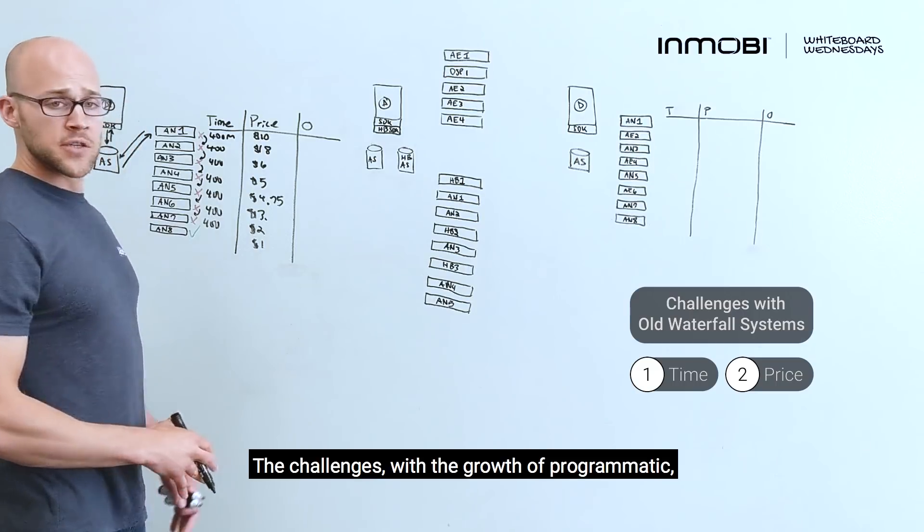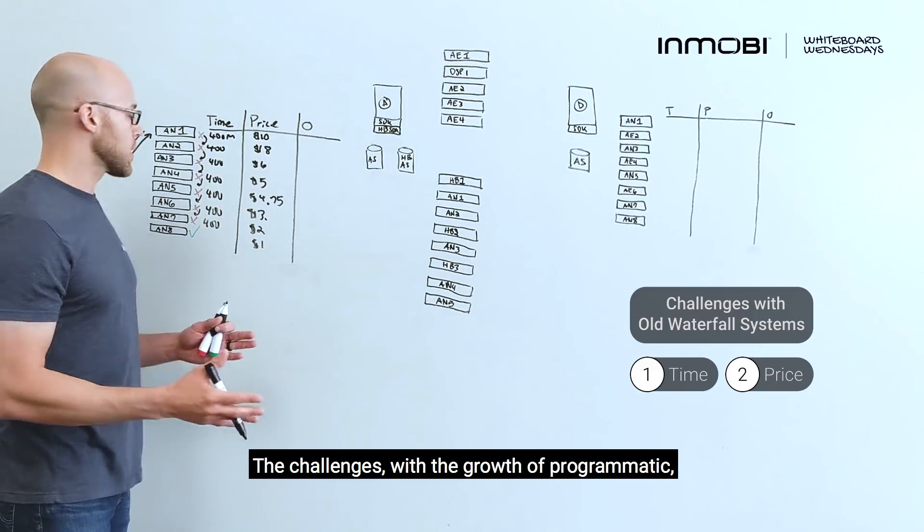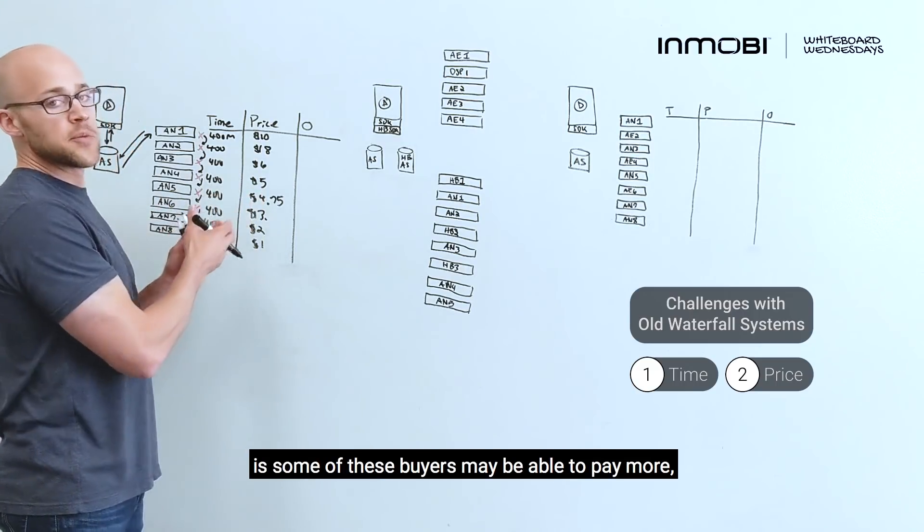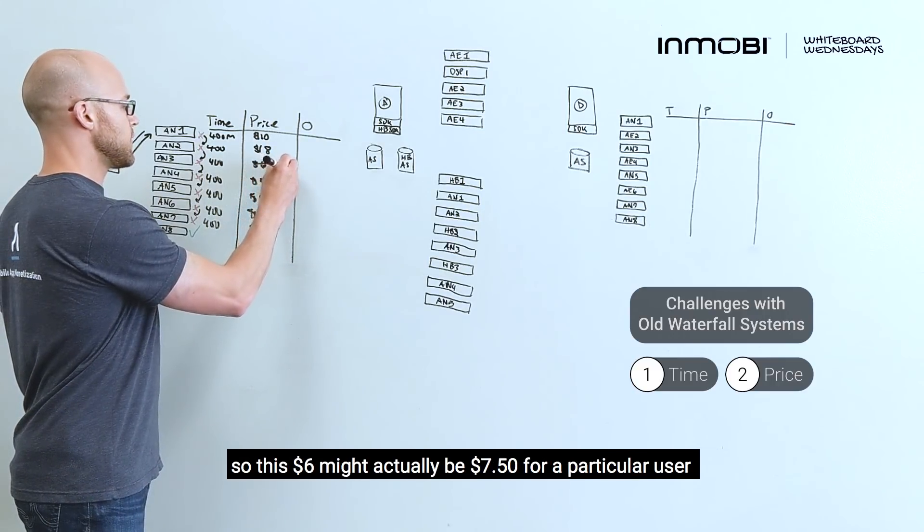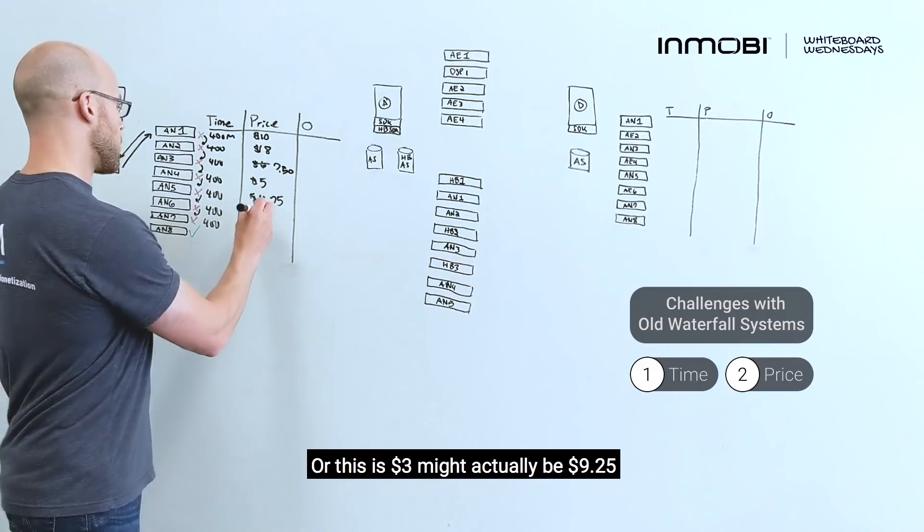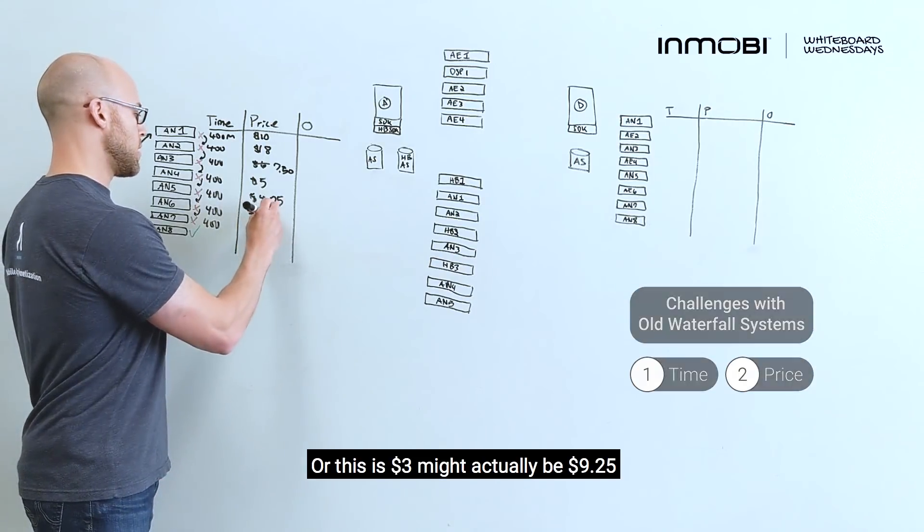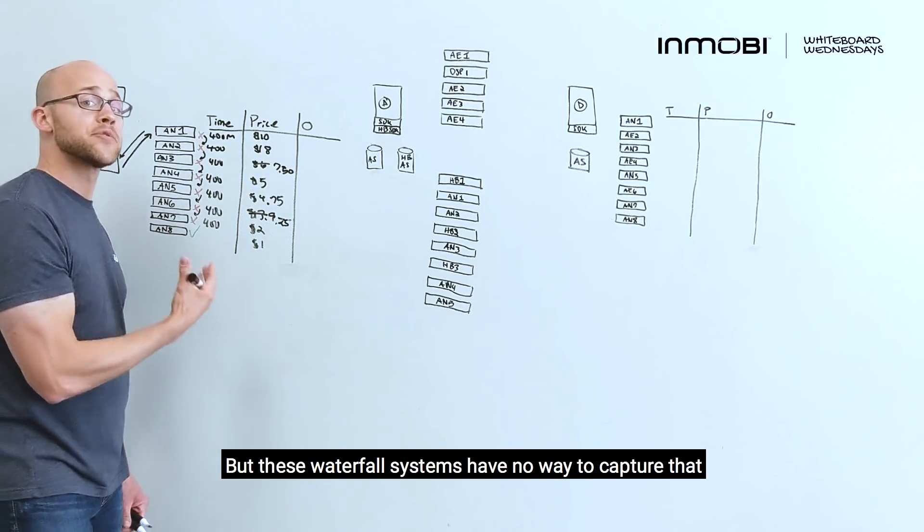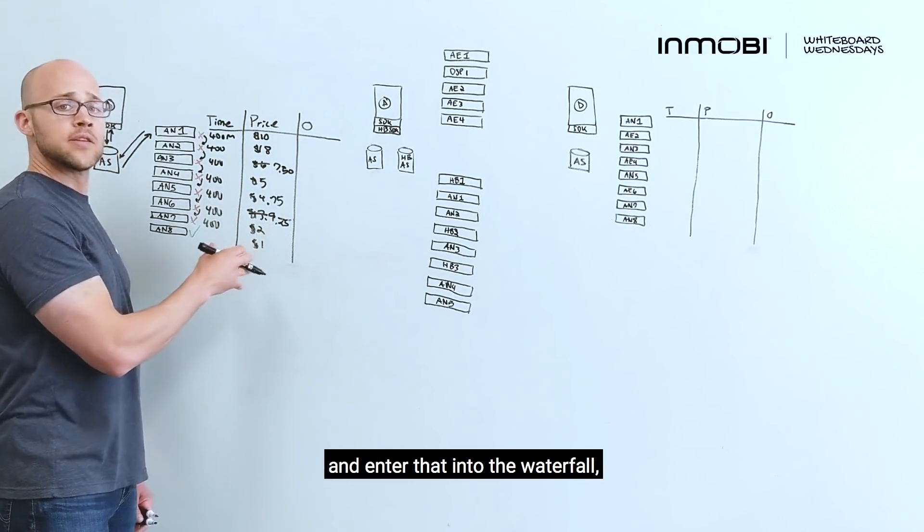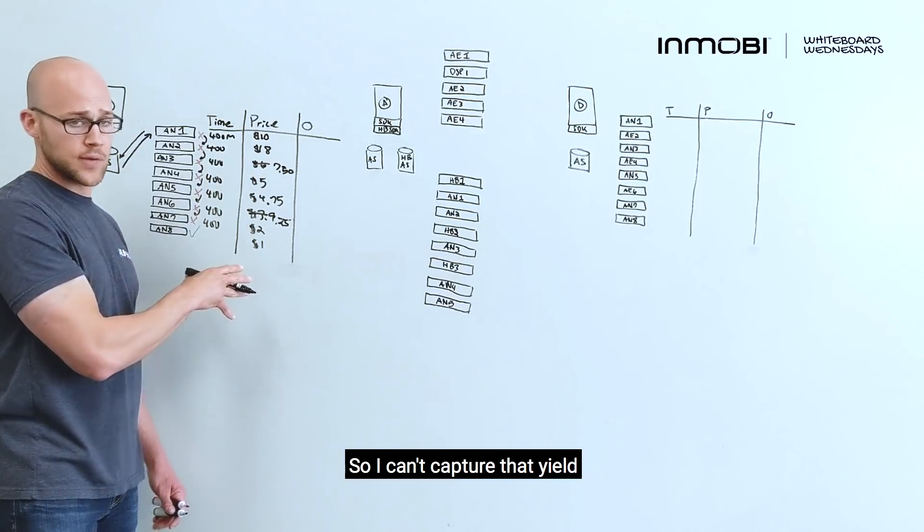The challenge is with the growth of programmatic, some of these buyers may be able to pay more. So this $6 might actually be $7.50 for a particular user. Or this $3 might actually be $9.25. But these waterfall systems have no way to capture that and enter that into the waterfall. So I can't capture that yield.